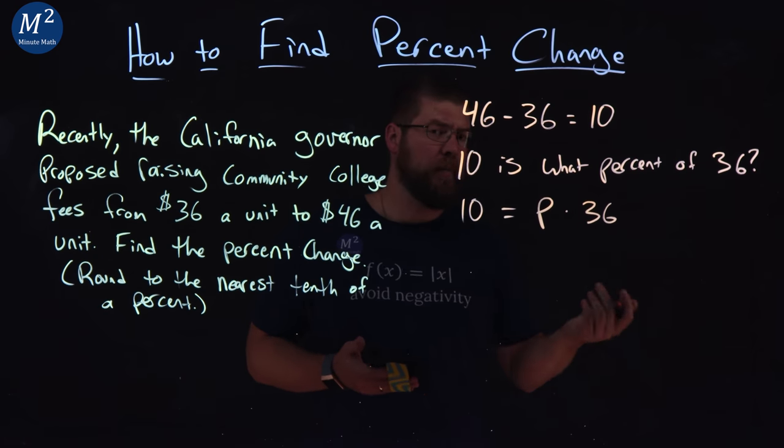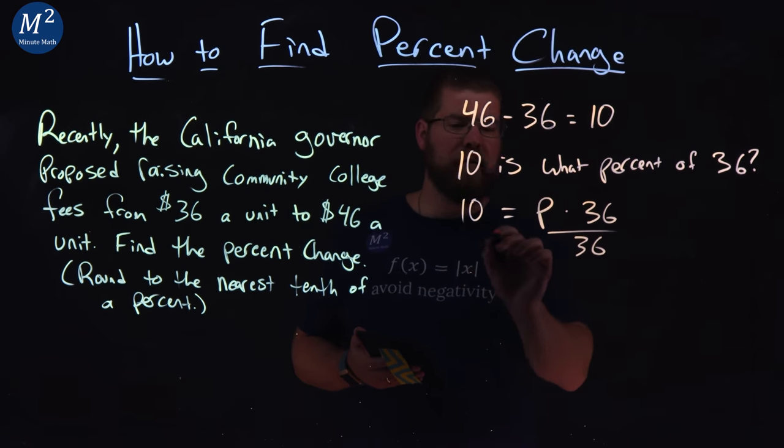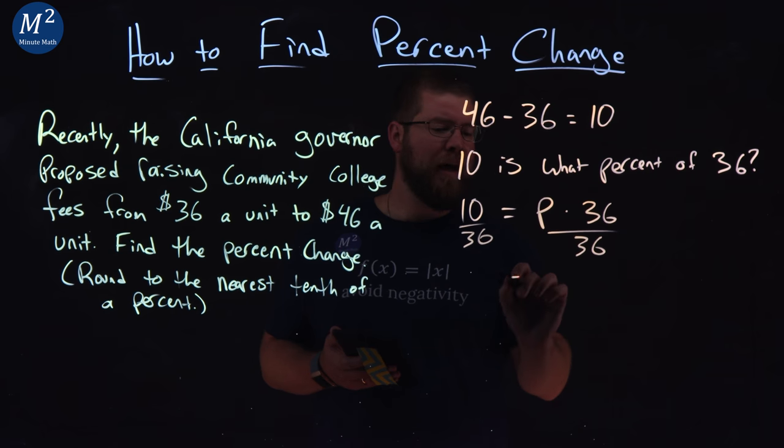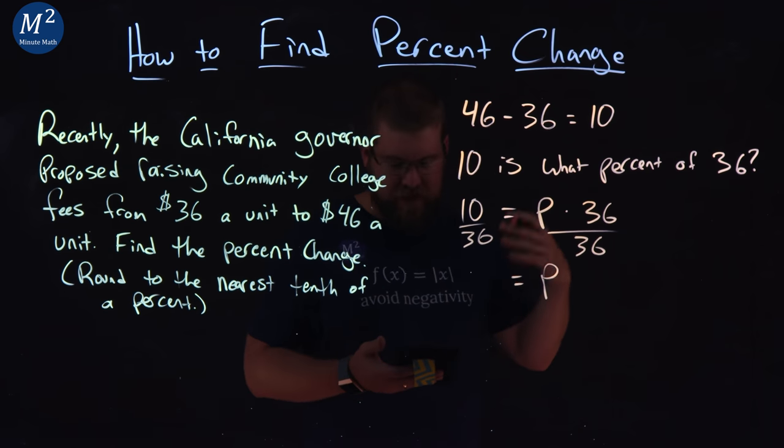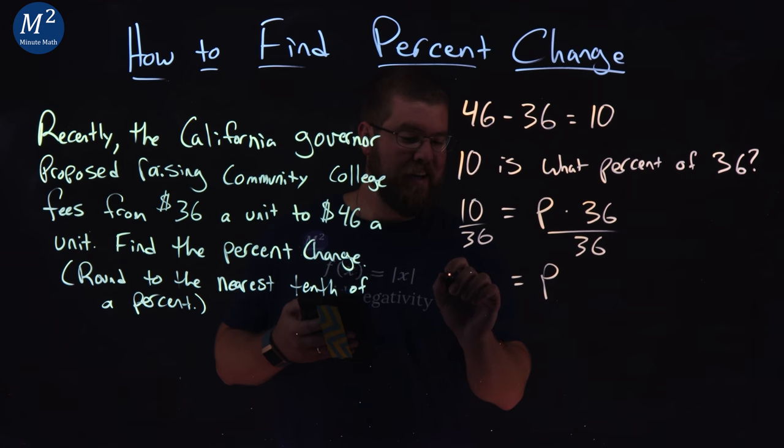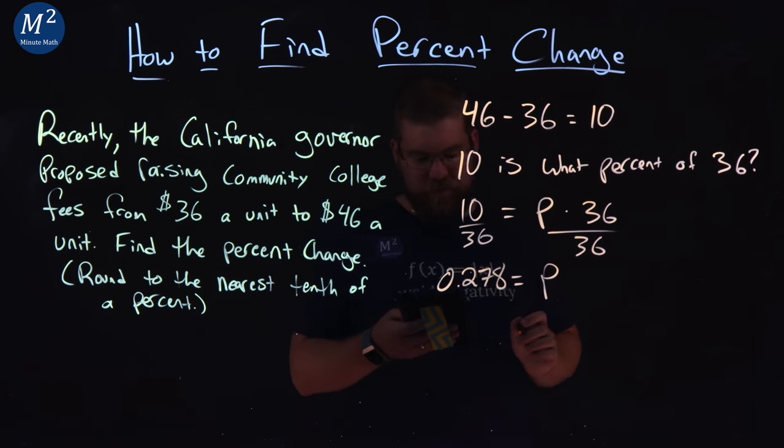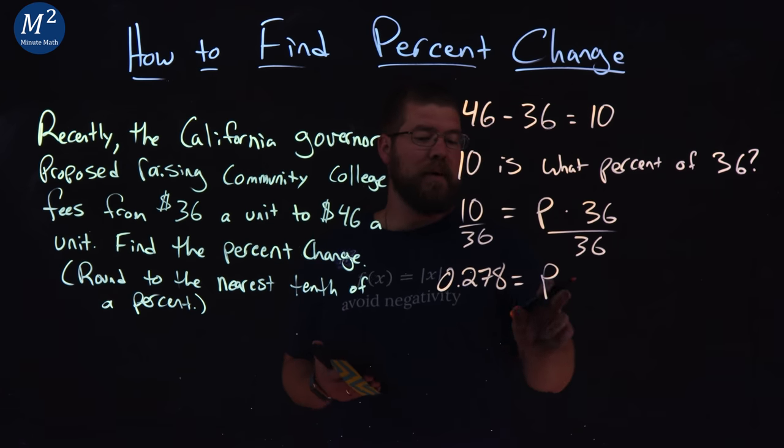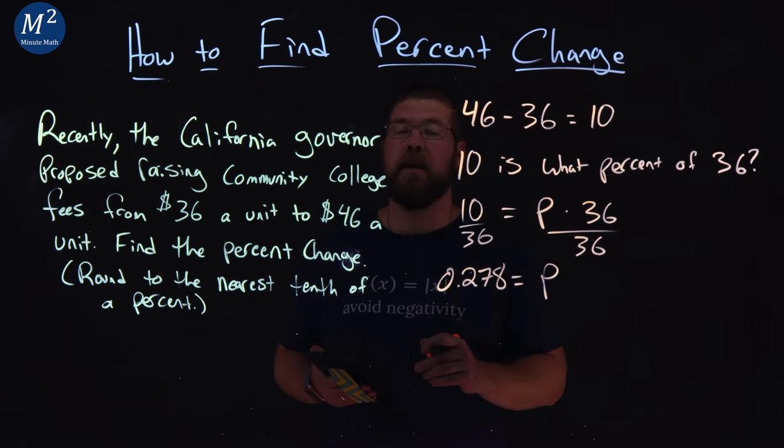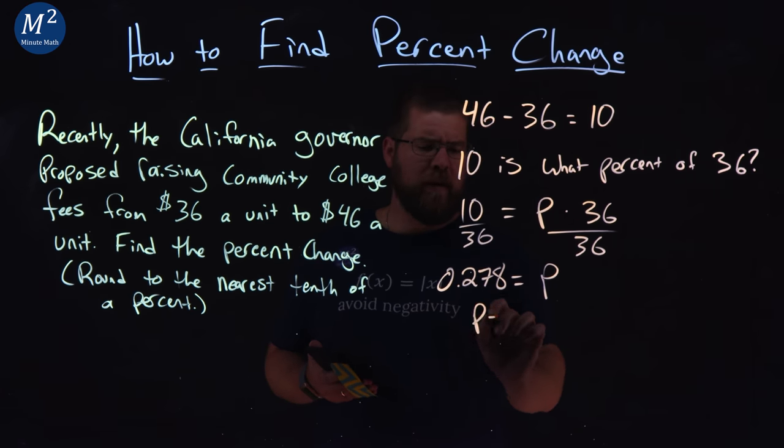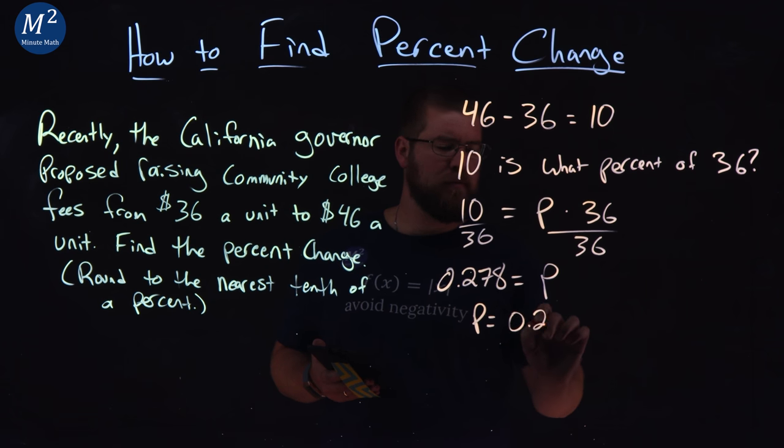So, now we want to solve for P. I'm going to divide both sides by 36. And I have P by itself here, and 10 divided by 36 is 0.278. So, our P is 0.278.